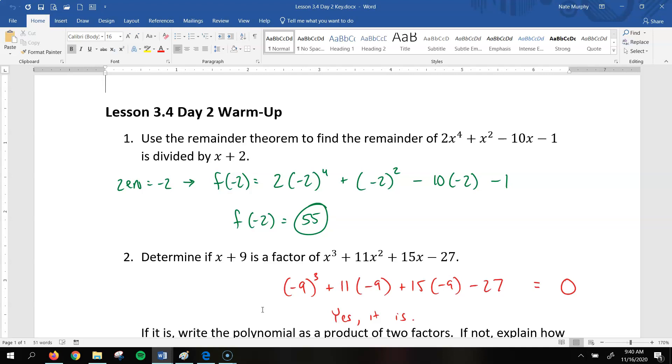and see if you get 0 as your answer. If you get 0 as your answer, then it is a factor, or there's no remainder. Same thing. So for this problem, the 0 of x plus 2 is negative 2. So when you put negative 2 into that original function,